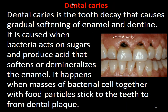Dental caries is tooth decay that causes gradual softening of the enamel. It is caused when bacteria act on sugar and produce acid that softens or demineralizes the enamel, forming a cavity. This happens when masses of bacterial cells together with food particles stick to the teeth to form dental plaque. This completes the discussion on the digestive system, nutrition in amoeba and paramecium, and photosynthesis in plants.